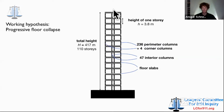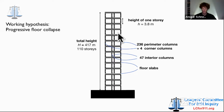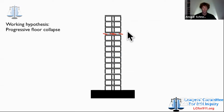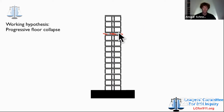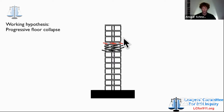Here you see a sketch of the building. These horizontal bars are the floor slabs, and you see the columns indicated here. One story had approximately a height of 3.8 meters. We assume that there's one story which is so much weakened because of the aircraft impact or because of the fires that it can't stand the weight anymore. This story collapses, and then the top section impacts the lower floor, and then the story below also collapses, and so on and so forth. We assume that this behavior happened to this building — it's an assumption.